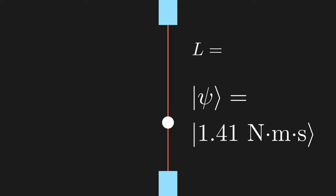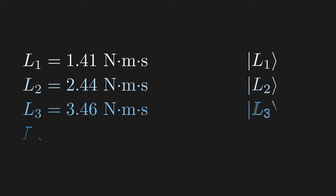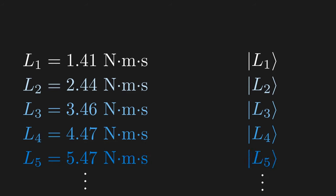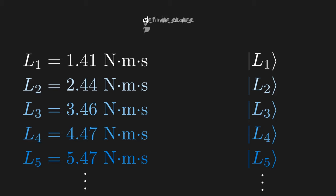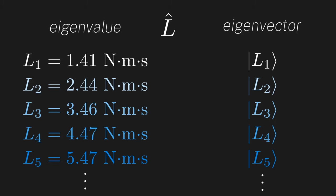If instead the apparatus told us the particle had an angular momentum of 2.44 newton meter seconds, then the particle would be in a quantum state corresponding to that outcome. Hopefully you see that this would be true for any possible angular momentum we could measure. So what we have is a list of possible measured values and associated kets, representing states that 100% have that value. We call these special states definite states. In these special states, our particle has a definite 100% certain value for angular momentum, no ifs or buts.